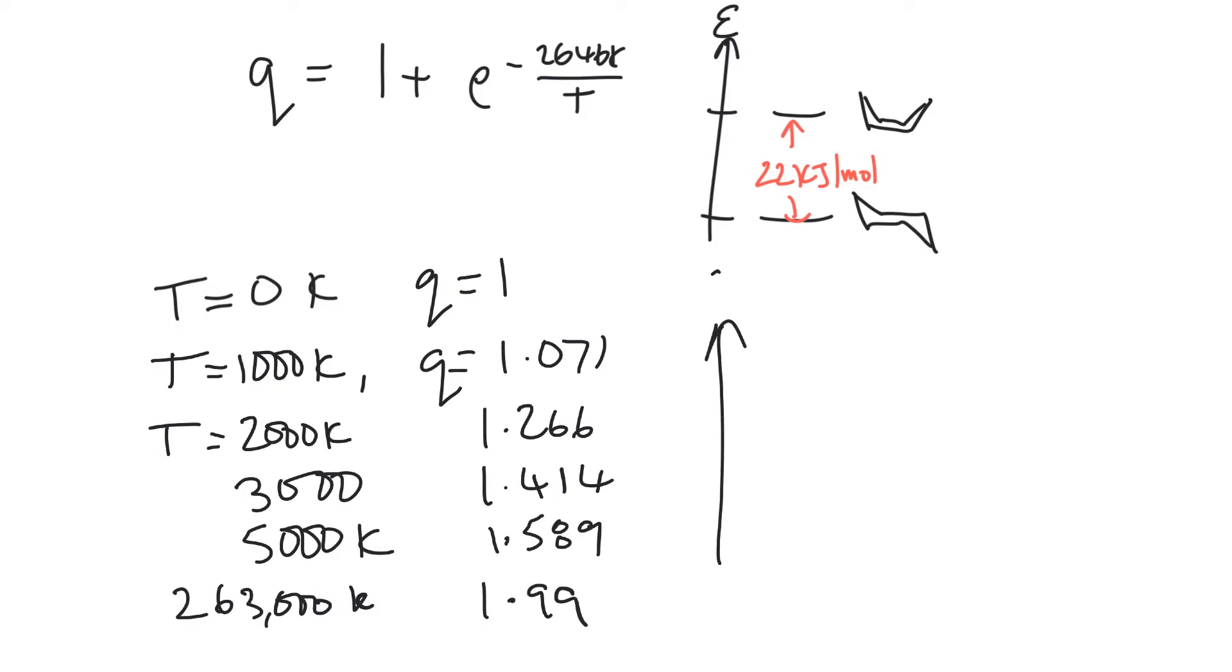And so we can kind of plot the behavior of our partition function versus temperature. And our lowest partition function is going to be 1, our highest is going to be 2, so we should probably break the axis here. And here's our 0, and what we can see, of course, is that at Q equals 1 and Q equals 2, we can draw a horizontal dotted asymptotic line. And as we increase the temperature.